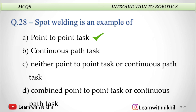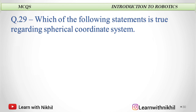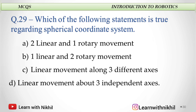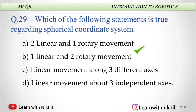Which of the following statements is true regarding the spherical coordinate system? Two linear one rotary — again a similar type of question. The answer here is one linear and two rotary movements.